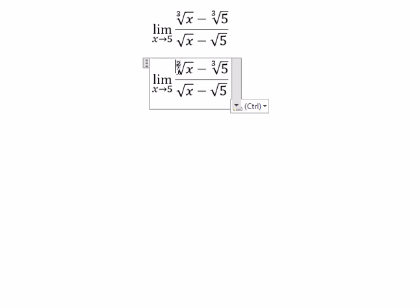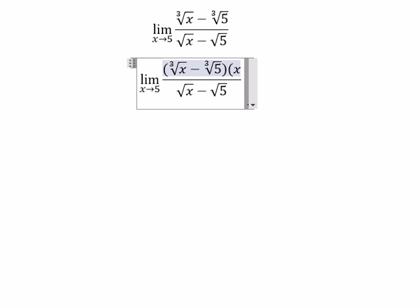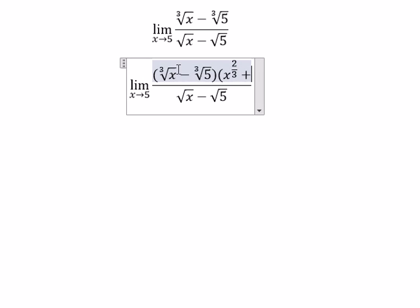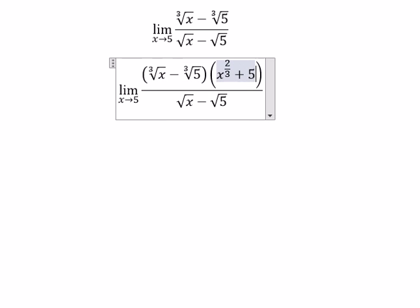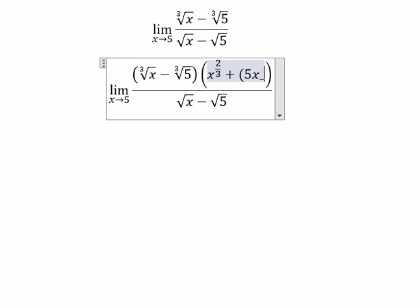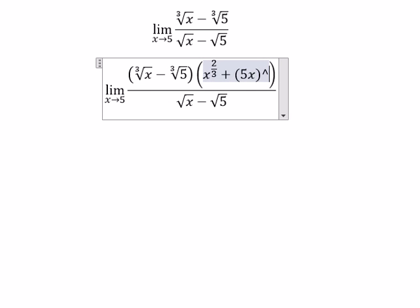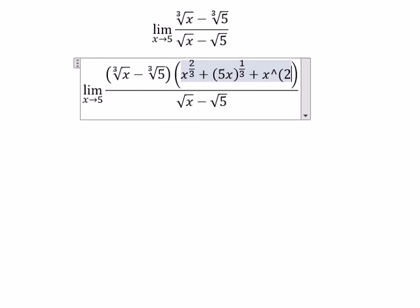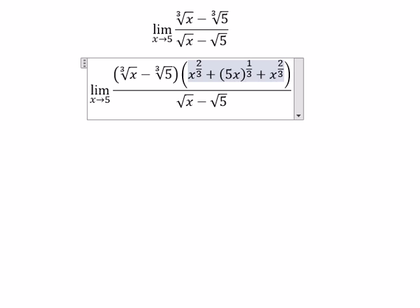We need to multiply this. s to the power of 2 over 3 plus 5, 5s to the power of 1 over 3 and s to the power of 2 over 3. So that means we need to divide with this one too.